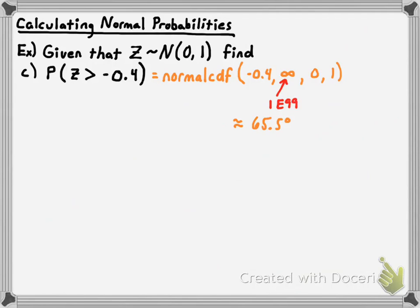At this point you ought to know what it means for a data value to be normally distributed, and you ought to know how to work with a standard normal distribution to calculate the probability that a data value is within a certain number of standard deviations of the mean, or is greater than or less than a certain value. Thanks for watching, and we're going to work with non-standard normal distributions in the next video. Bye!